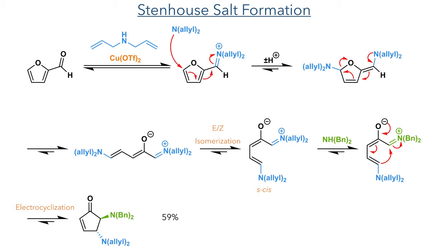During this reaction, a transamination will also take place, introducing dibenzylamine at the alpha position. In this S-cis conformation, it can undergo a cyclisation reaction forming a 5-membered cyclopentenone. This exclusively produces the trans-diastereomer of the molecule, which suggests that it goes through an electrocyclisation mechanism.